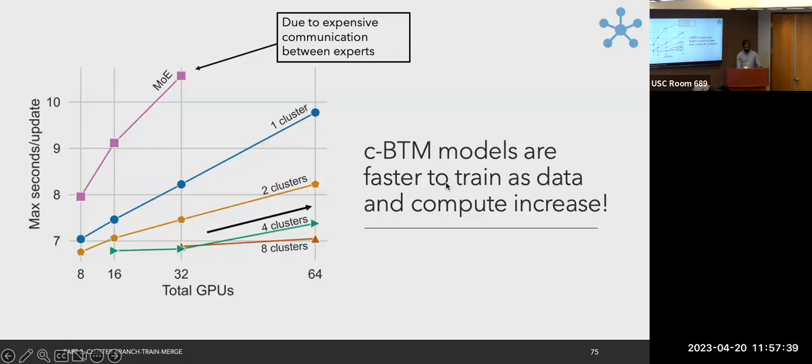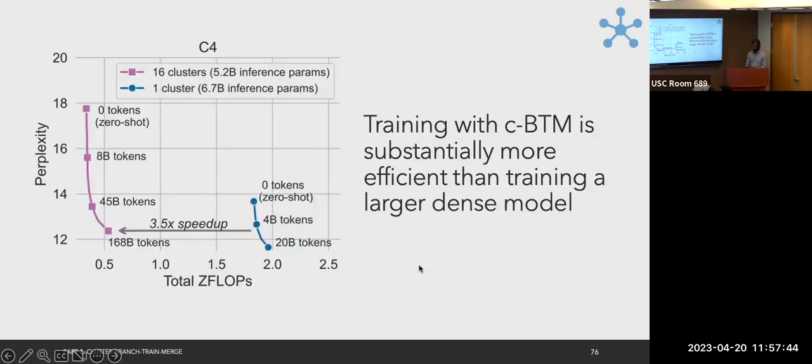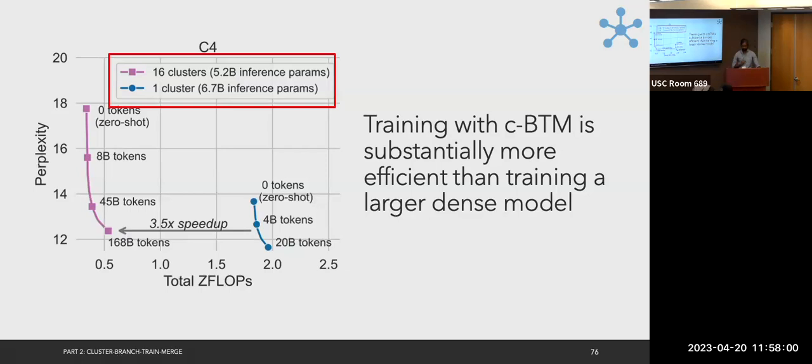Finally, training a really large CBTM model and then sparsifying it at inference time can outperform a large dense model with similar parameters. We demonstrate this by training a 16-cluster model and using only the top-4 experts at inference time.